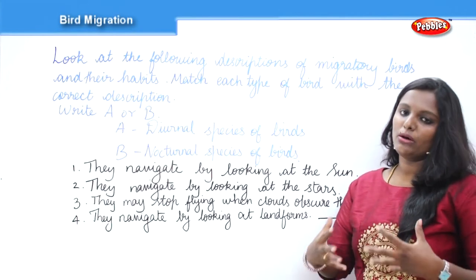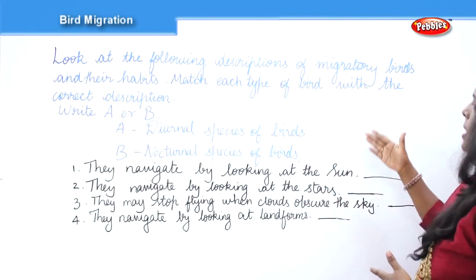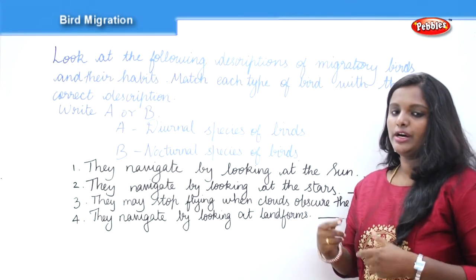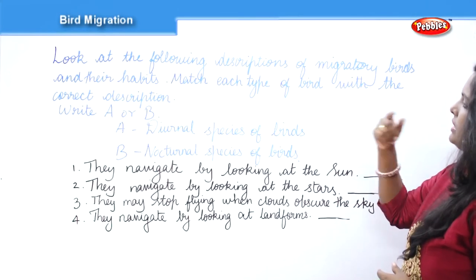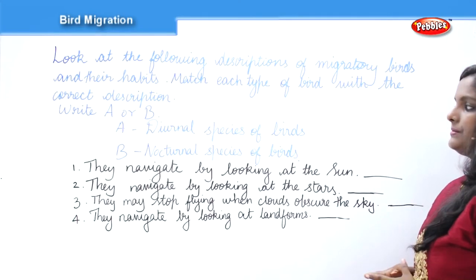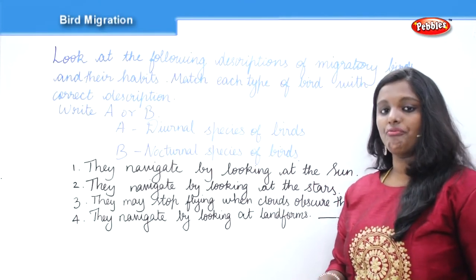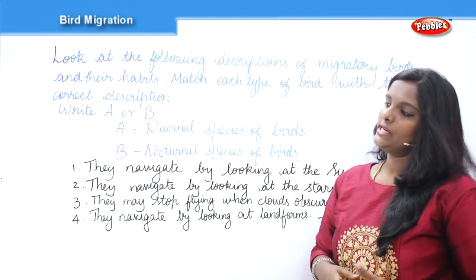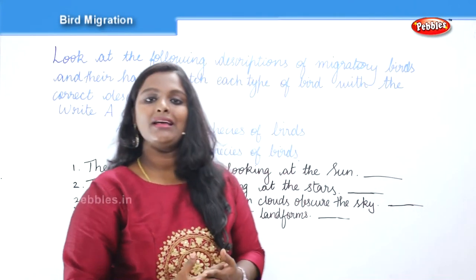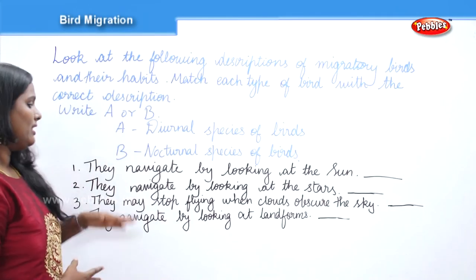The next type of question involves matching descriptions. You are given descriptions about topics from the passage and must match them with the correct category. Since our passage is about bird migration, we have descriptions of migratory birds and their habits. You have to match each type of bird with the correct description — option A for diurnal species and option B for nocturnal species of birds.